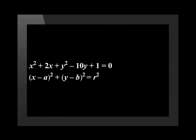Let's take a look at it again. The standard form is x minus a, squared, plus y minus b, squared, equals r squared. We need to manipulate our equation to be in this form. To do this we will have to complete the square so that we have two perfect square trinomials, one with just x and one with just y.